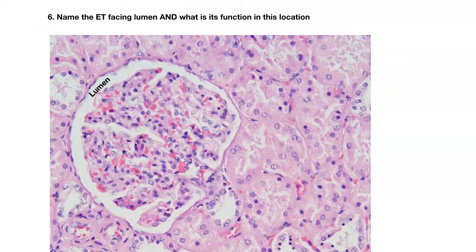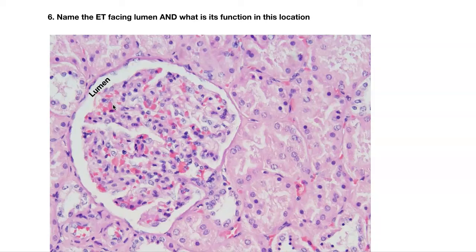Number six. Here's your lumen. Name this epithelial tissue facing the lumen, and — knowing what this is — what is the function of this epithelial tissue in this location? First name the epithelial tissue and its function in this location.